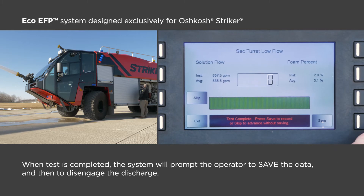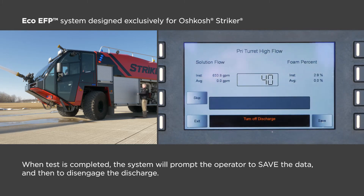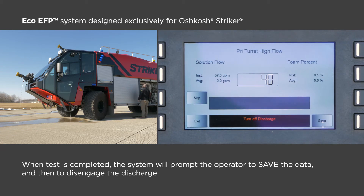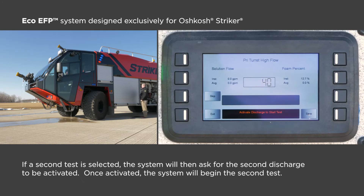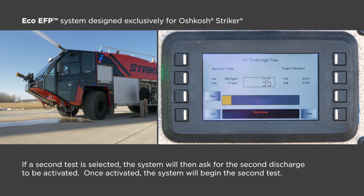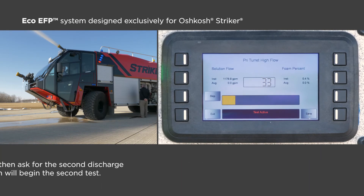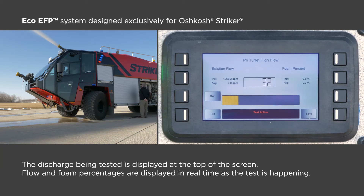At the end of the test, the system will ask the operator if they would like to save the data. Next, it will prompt the operator to disengage the discharge. If a second test is selected, the system will then ask for the second discharge to be activated. Once activated, the system will start the second test. The discharge being tested is shown at the top of the screen while the instantaneous flow and foam percentage are displayed on the screen.